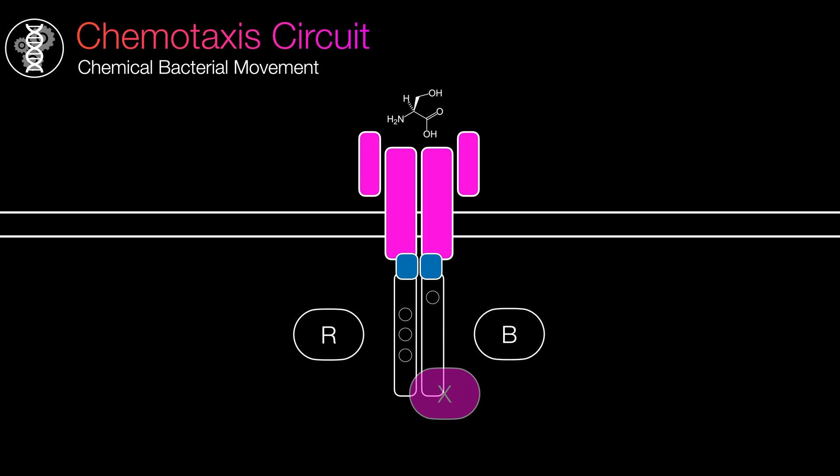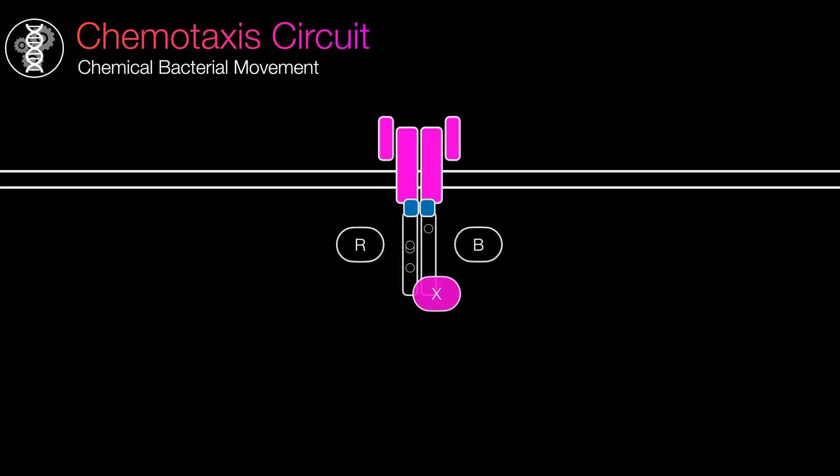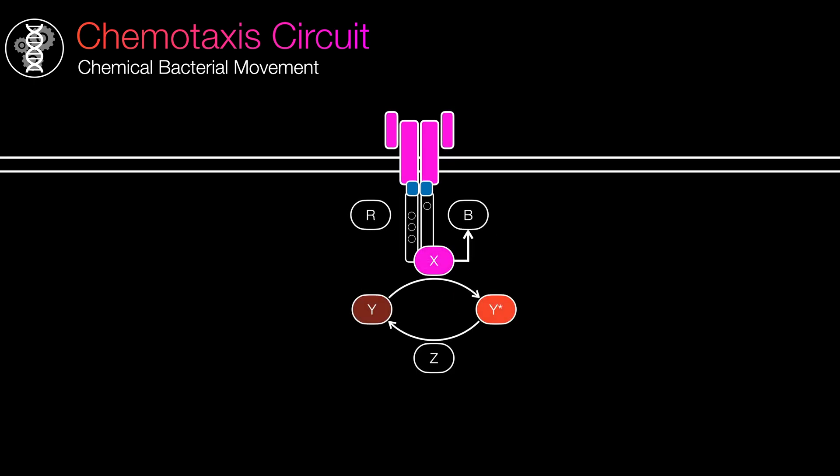However, there is an asymmetry in this control system. When X is activated, it also activates B. Now, let's put all the pieces together and trace the cascade of events when a signal is sent in. The attractant lowers the X protein level, which subsequently reduces B and Y activation, resulting in a lower tumbling frequency.